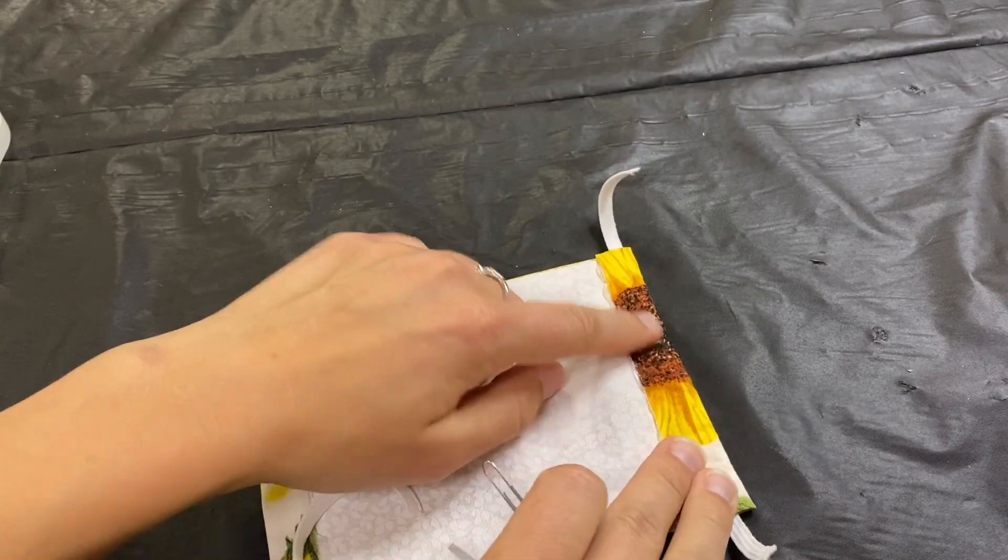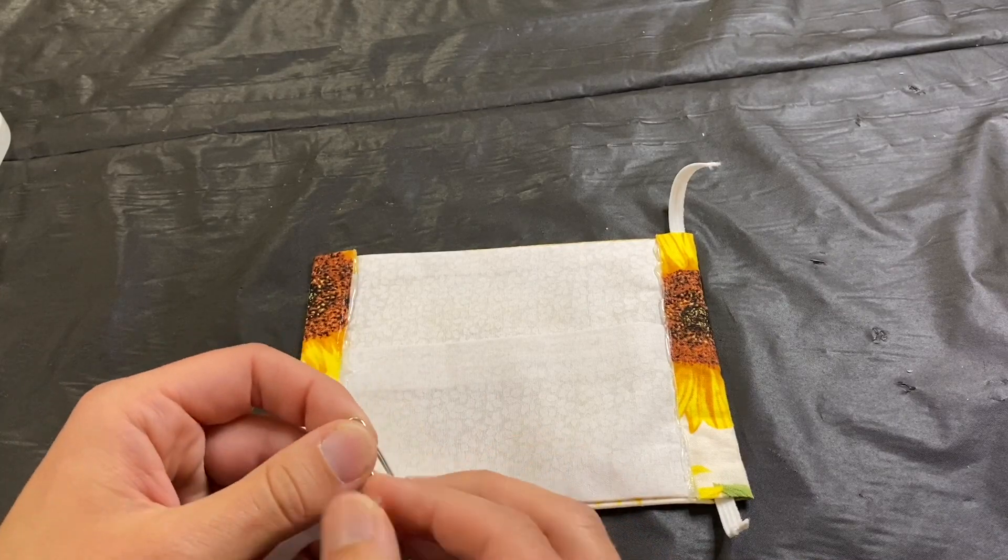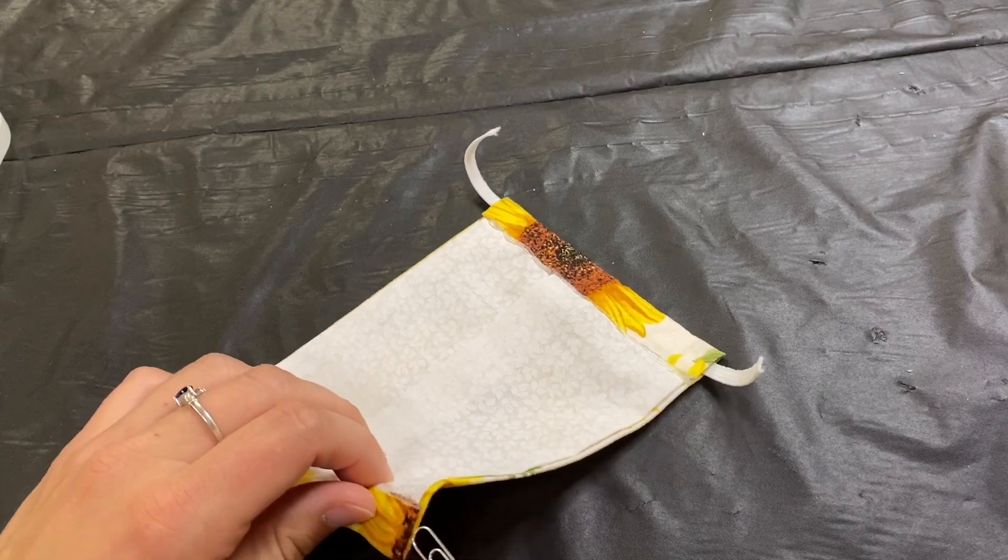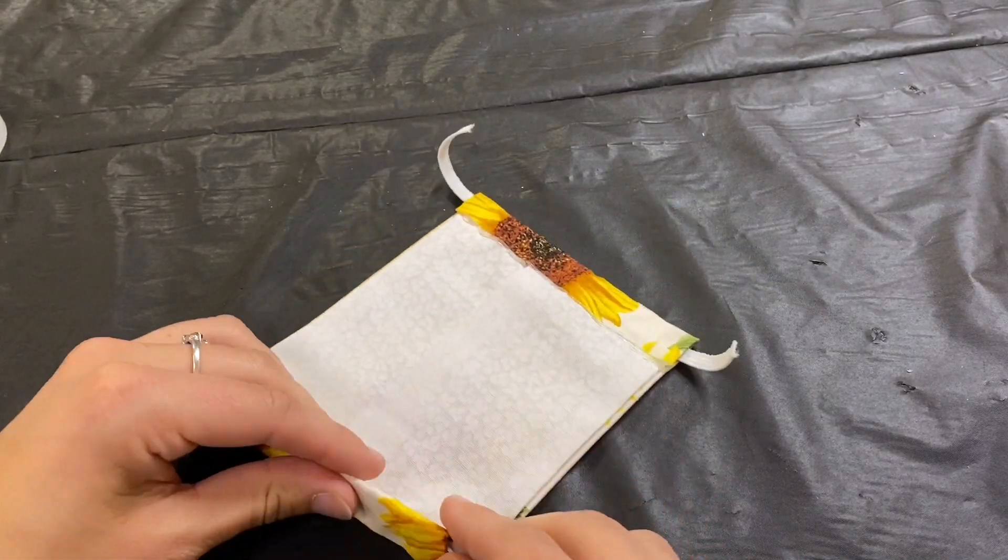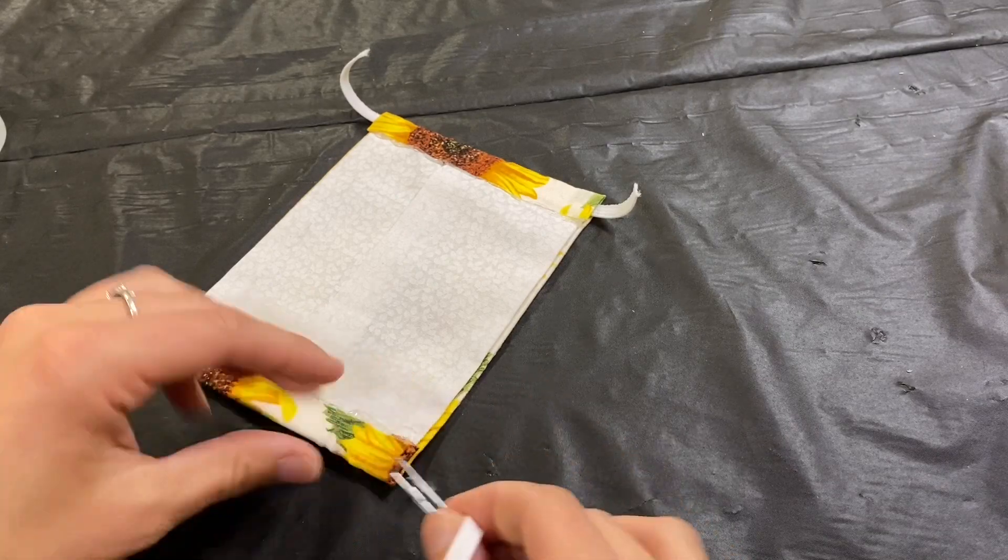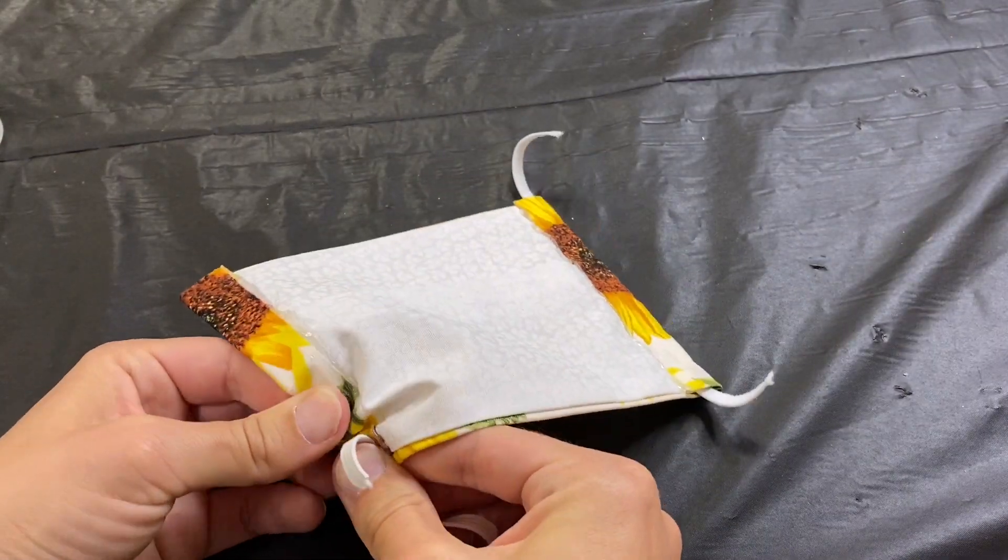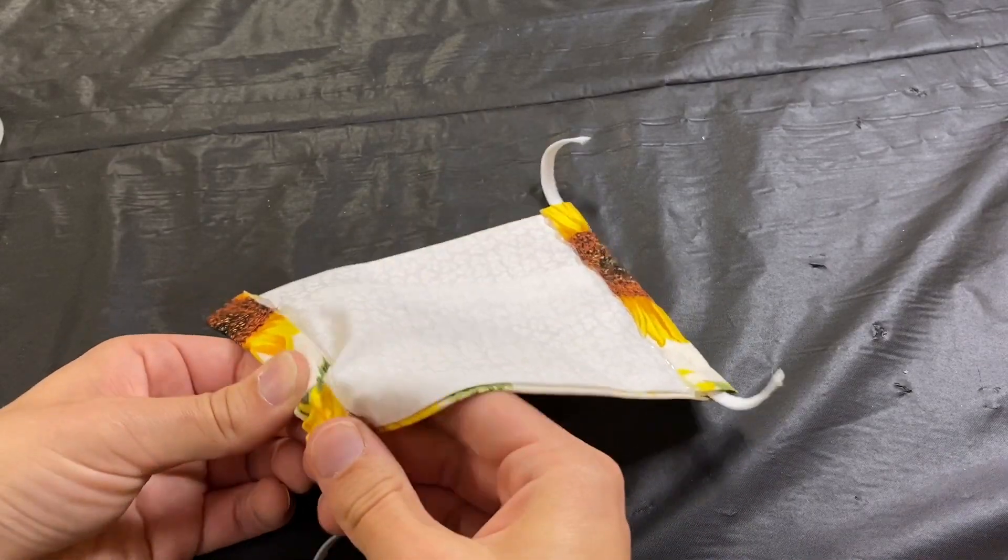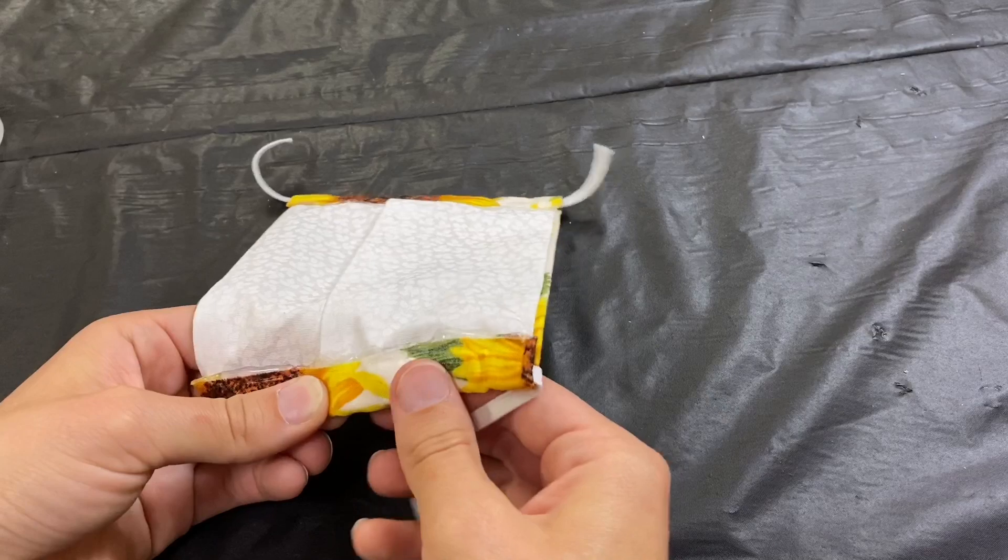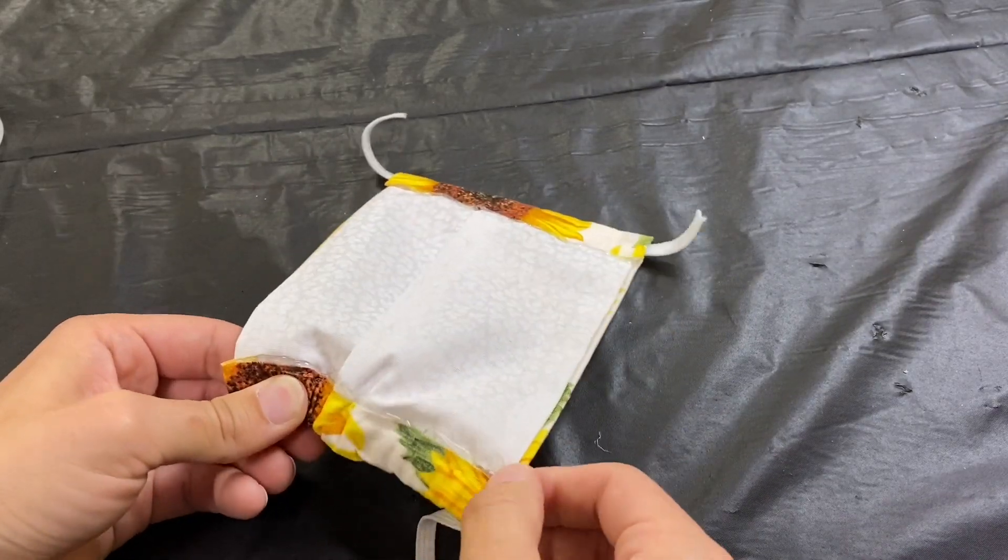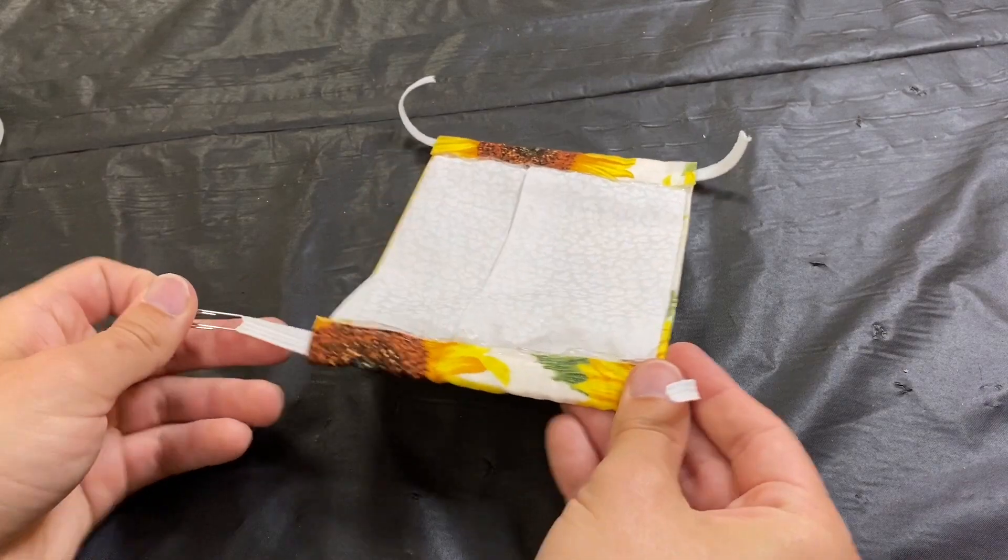All right, now we need to get our elastic through our fabric loop like that. This time I'm using a paper clip. You can also use a bobby pin or a safety pin. If you want to see how I do it with the bobby pin, you can just look back at my sewing machine tutorial and see how that works. This one, I loop it through and just leave a little bit on the end. And then I push the paper clip through my fabric tube here. Just push a little bit in and then pull out on the other side like that. There you go.